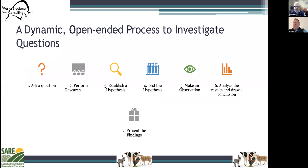First we need to learn about what the scientific process is. The scientific method is a process for experimentation that is used to explore observation and answer questions. The steps may vary slightly as used by scientists, but generally the scientific process includes these steps.